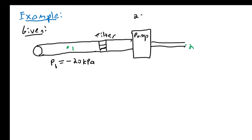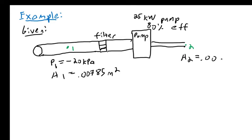So there's that, and then I'm going to have a pump that is a 25-kilowatt pump. This thing is 80% efficient, and I will tell the areas at each point. The area one is going to be 0.00785 square meters, and the area at two, area two is going to be 0.0019 meters squared here.